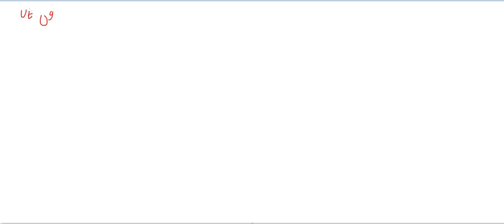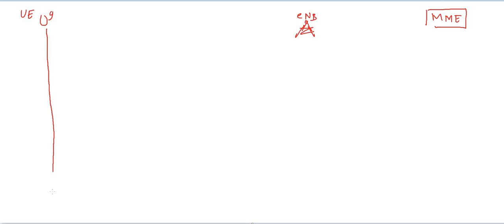In this lecture we will study how the UE establishes an RRC connection with the eNodeB. So this is our UE, this is our eNodeB, and this is our MME.